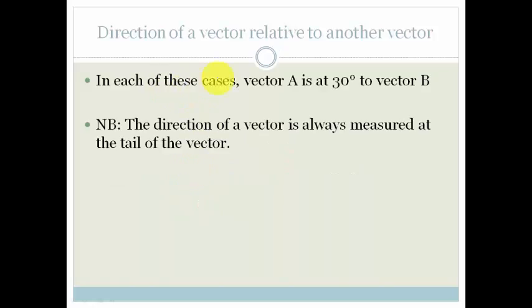Now, the other way we can do this is, and the last way we can look at it, is the direction of a vector relative to another vector. So, in each of these cases, vector A is at 30 degrees to vector B. And, you must remember the direction of the vector is always measured at the tail of the vector. So, we've got A and B. And, we're saying that they are 30 degrees from each other.